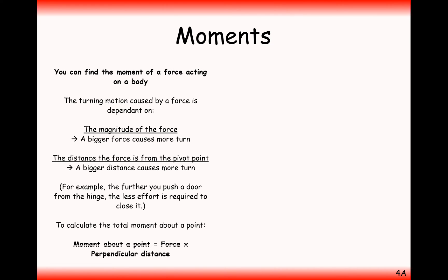To calculate the moment about a point, we use this formula here, and it's just a simple multiplication between those two elements we've just been looking at. A moment about a point is equal to force times perpendicular distance. So you just multiply those two together.